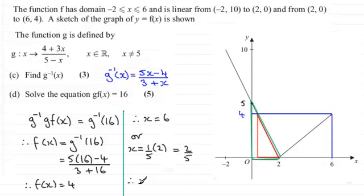So in summary then, we've got two solutions, and those solutions are x = 6, or x = 2 fifths.